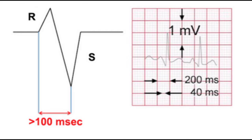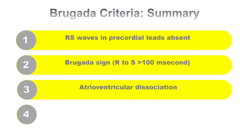This is the second step in the Brugada criteria. If this is present, this is VT. If it is not present, let's go to step number three. In step number three you ask: is atrioventricular dissociation present? If it is present, this is a VT. If it is not present, possibly it is SVT with aberrancy or SVT with bundle branch block.